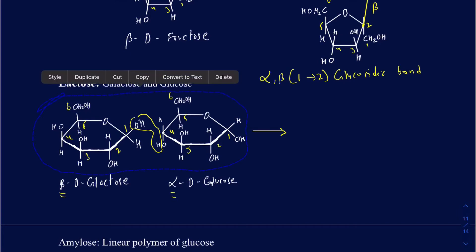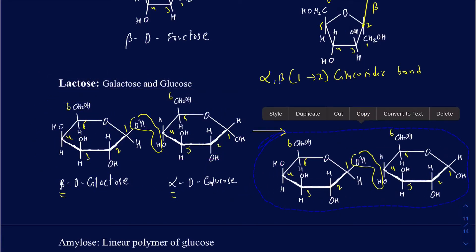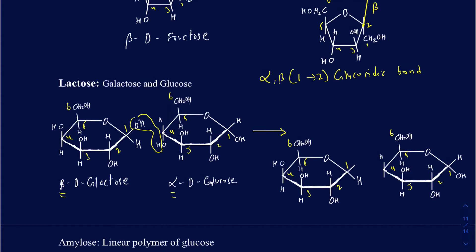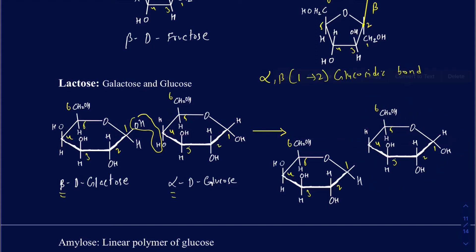I'll copy this down and put it right here. The way it's going to be positioned after making the bond, you still have the hydrogen there, and then you're going to have the oxygen there, and then there is your new bond. Since it's pointed up — in this particular case, the oxygen and the CH2OH are both cis to one another — that's going to be your beta bond. So it's going to be the beta-1 to 4 glycosidic bond.